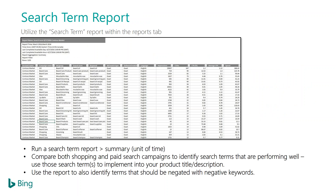The next thing to look at is the search term report. It's a good way to see which queries are triggering your product ads and which queries you might want to negate. Within the reports tab, under the dropdown, choose the search term report, select a time summary, and download it. You'll get a list of all search terms with KPIs around them. I like to filter from largest to smallest by clicks and impressions to identify which search terms are performing and which aren't — you can see CTR, spend, and conversions.